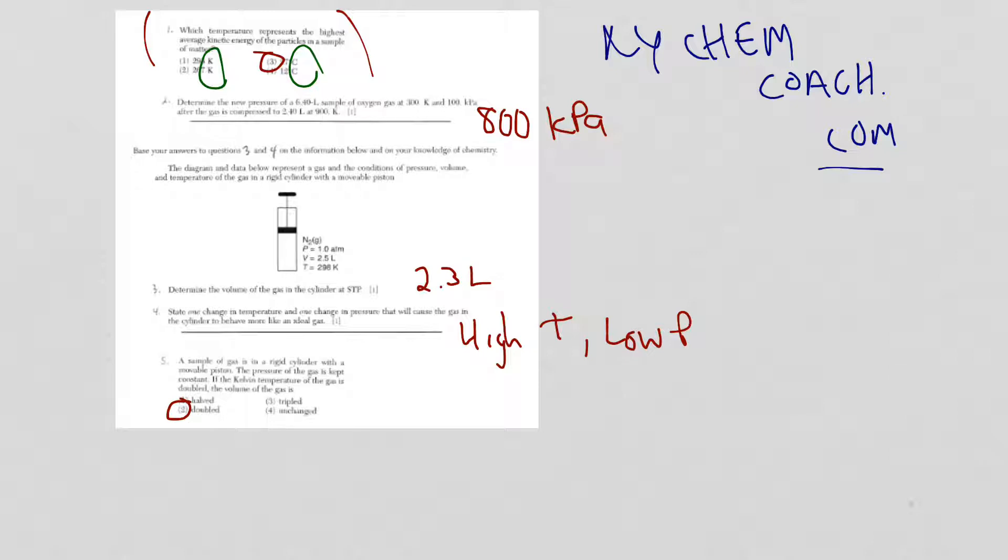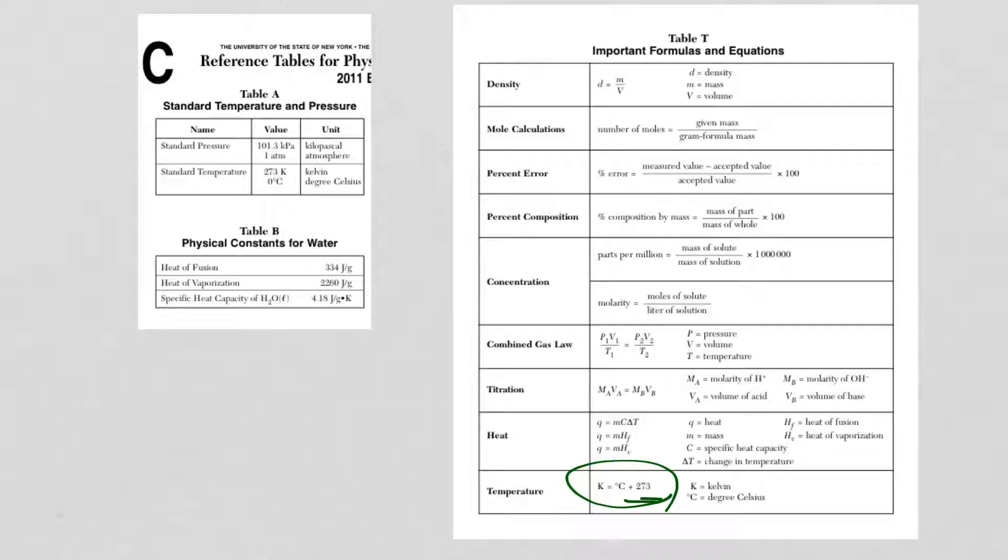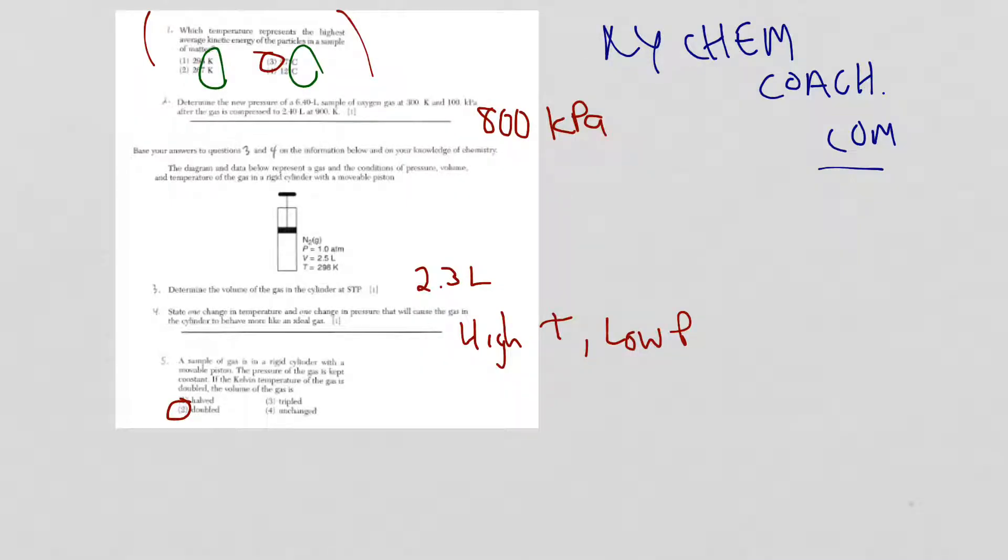For questions 2, 3, and 5, we're using the combined gas law: P1V1/T1 equals P2V2/T2. Let's take a look. The answer is 800 kilopascals. Let's make sure you know how to get there. My suggestion, and I keep telling this to my students, is write the equation down that you need, whether it's a part 2 or part 1 question.